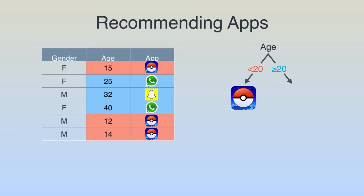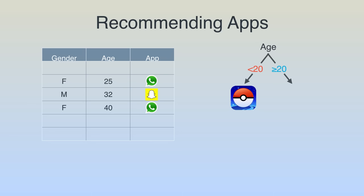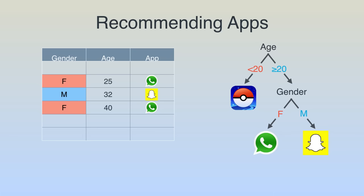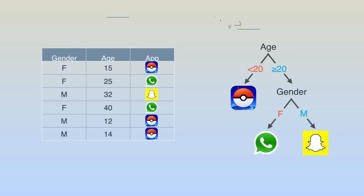So we add a question: are you younger than 20? If yes, we recommend Pokémon Go. If not, we look at gender. If you're a female you downloaded WhatsApp, and if you're a male you downloaded Snapchat. So we add another question: are you female or male? If female we recommend WhatsApp, if male we recommend Snapchat. What we end up with is a decision tree where decisions are given by the questions we ask, and this decision tree was built with the data.